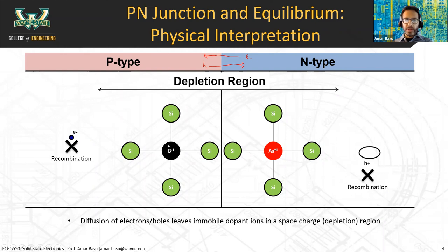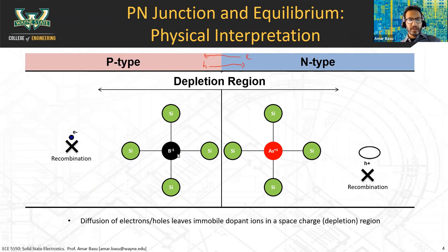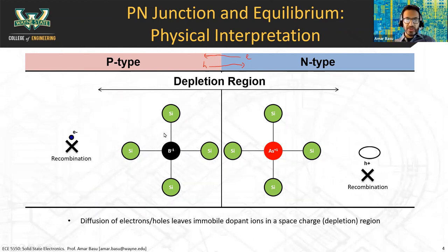In the case of the P-type semiconductor, you have high hole concentration on the left, so the holes diffuse over to the right. After diffusing over to the right, they also see a region with lots of electrons, so there's a high probability of recombination. What you end up with at the interface is a region that doesn't have any mobile electrons or holes — only charged immobile ions. This is called the space charge region or depletion region.